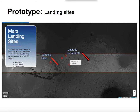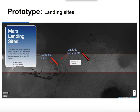When the user moves through the story, depending on what is being explained, some layers are added or removed. For example, when we are at the Mars landing sites section, the landing sites layer is added, and the progress bar indicates the progress of the story.